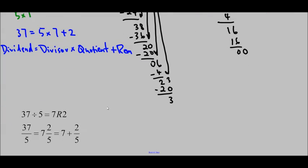Another way to write this is: if you think about 37 divided by 5, we know the divide sign is really just another way of saying fractions. So 37 over 5 is the same thing, which means that 7 plus 2 over 5 is 37 over 5. So if I wanted to write it as fractions, I can do it in this way where I've got that mixed number.